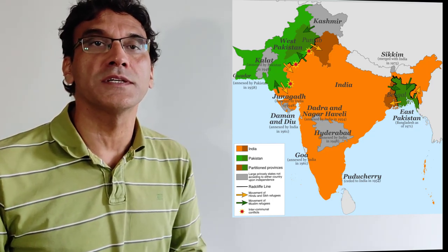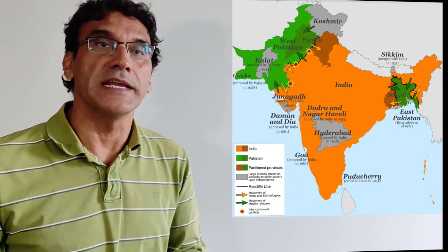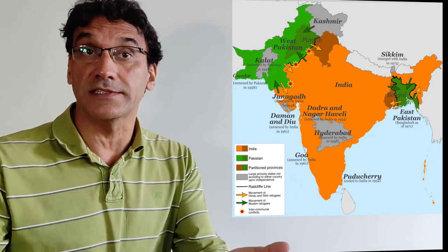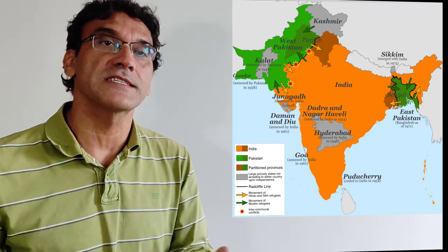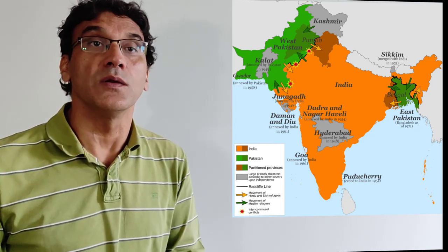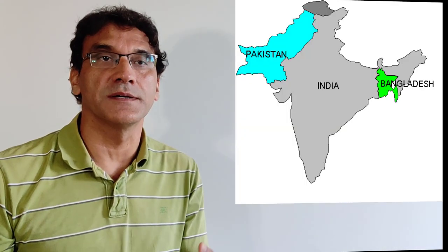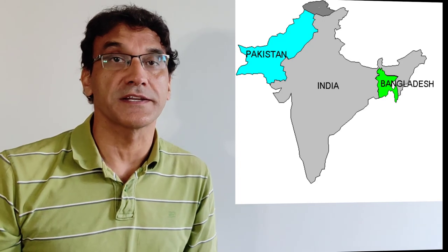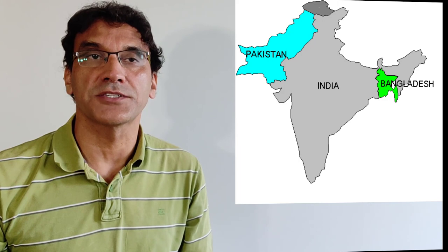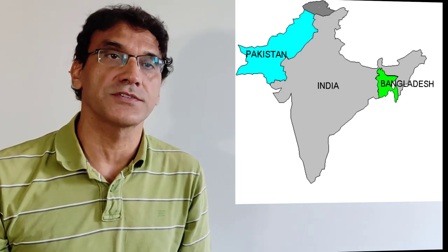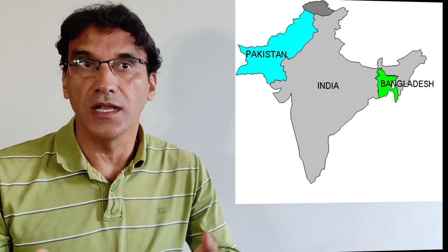East and West Pakistan were separated by more than 2,000 kilometers, with India in between. East Pakistan later became Bangladesh after a bloody war between India and Pakistan in 1971. This second partition — as it is sometimes called — is not the scope of this lecture, so we will focus only on the partition of India in 1947.